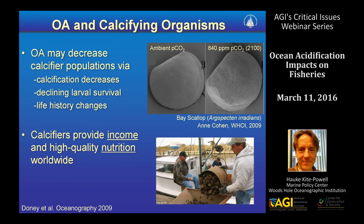I want to amplify on some of the things that John and Bebel have said, focusing in particular on shellfish, because, as John mentioned, they are among the most vulnerable and likely to be affected. The reason, of course, is, as Bebel pointed out, the fact that a lower pH in the ocean makes it more difficult for calcifying organisms to build their shells and skeletons.